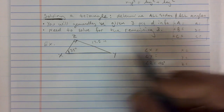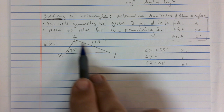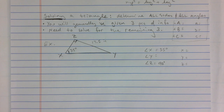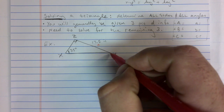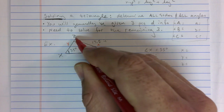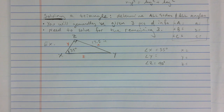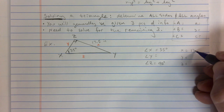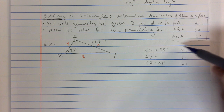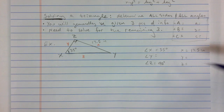We know side X is 17.5 inches. As you can tell, you have three pieces of information, and we're going to have to find the other three. In my opinion, the easiest one to find first would be angle Y.